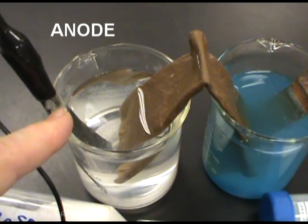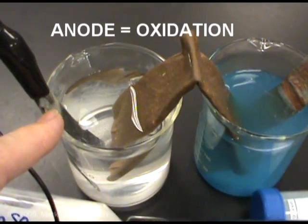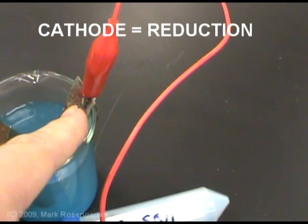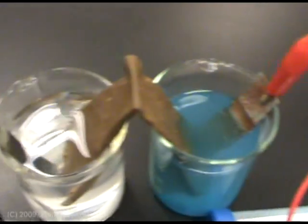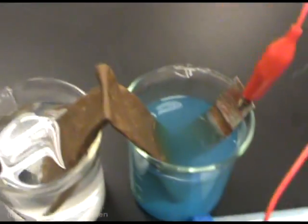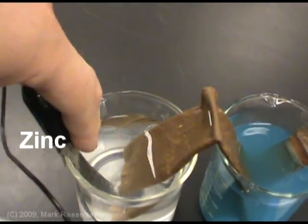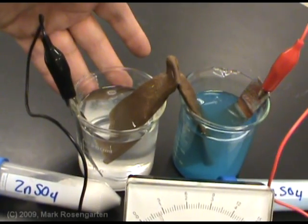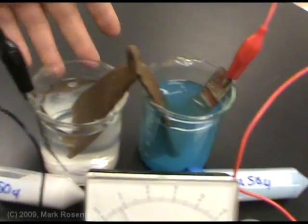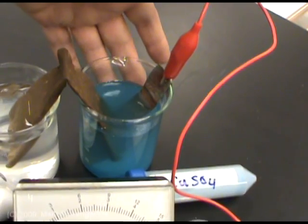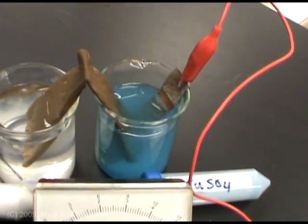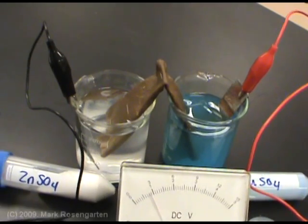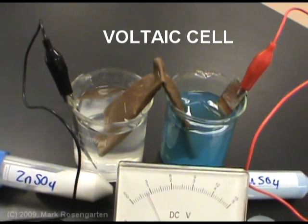This is the anode. The anode is where oxidation takes place. This is the cathode. This is the electrode where reduction takes place. The anode and cathode refer to the metal strips that the wires are connecting onto. This is called the anode half cell. And this is called the cathode half cell. And together, these two half cells form a voltaic cell.